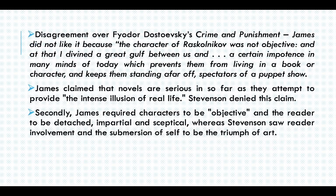There was also a disagreement regarding a character in Dostoevsky's Crime and Punishment. James says he did not like the major character in that work — the character of Raskolnikov. He says he doesn't like this character because it was not objective — it actually made the reader sympathetic to this character and therefore it is not objective, which prevents them from standing as detached spectators and keeps them from entering the book at a proper critical distance.